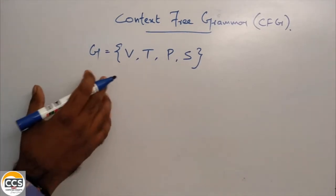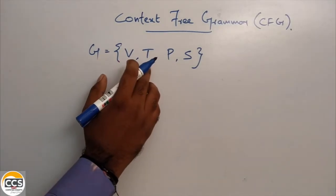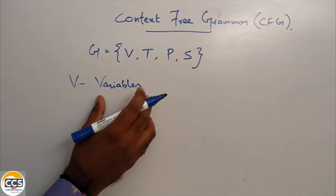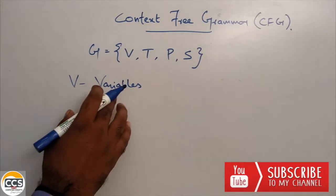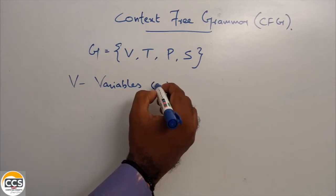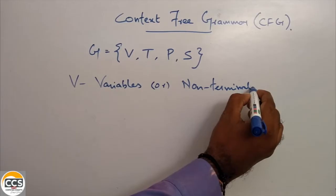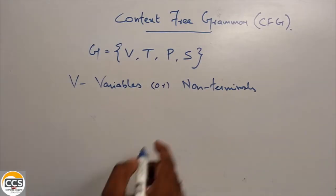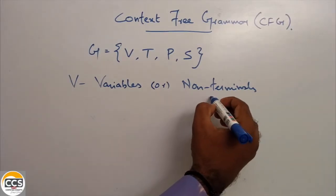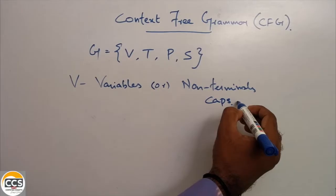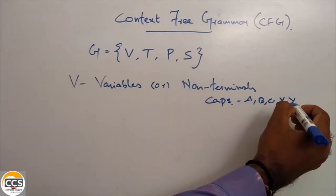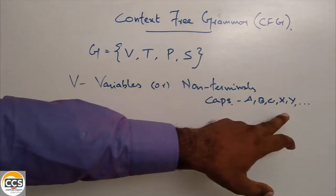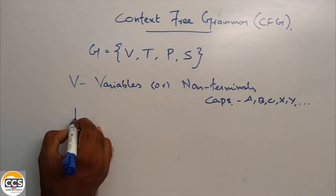This is a bit different. G equals to V, T, P, S. V stands for variables. In programming language, variables represent variability. This is called non-terminals. Variables are non-terminals. They are mostly represented by capital letters — A, B, C, X, Y.